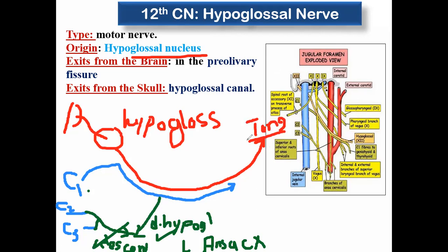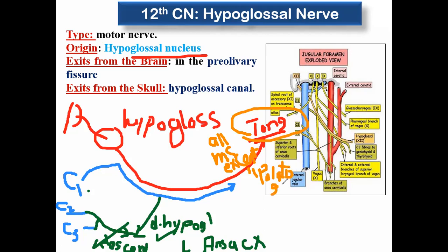The hypoglossal nerve itself is the maestro of the muscles of the tongue. It supplies all muscles of the tongue — styloglossus, hyoglossus, genioglossus — except one muscle: the palatoglossus, which is supplied by the vagus, because it is related to the palate and the maestro of the palate is the vagus.